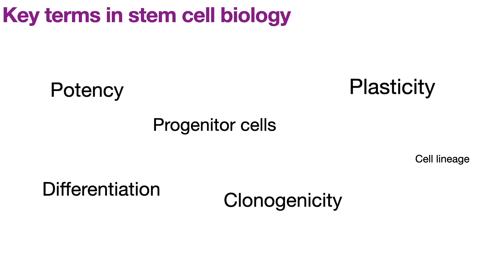Cell lineage refers to all the different cell types a stem cell or any other cell undergoes to form a specialized cell. For example, for a cell to become a macrophage, a cell from the mesodermal layer differentiates into a hematopoietic stem cell, which differentiates into a common myeloid progenitor cell, then into a myeloblast, then into a monocyte, which becomes a mature macrophage. All these stages together constitute the lineage of the macrophage.